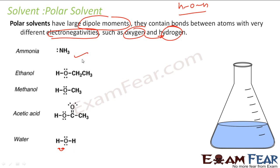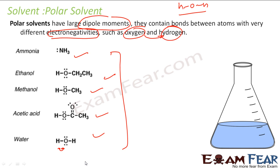So there are different kinds of polar solvents. For example: ammonia, ethanol, methanol, acetic acid, water — these are my polar solvents. They have large dipole moment and they generally have bonds with atoms of different electronegativities.